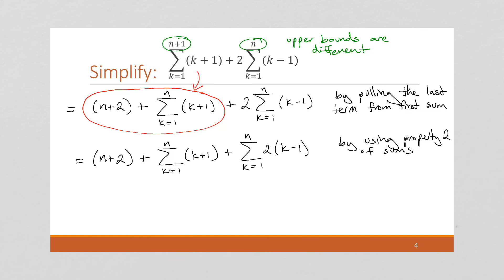Now, we notice that these two sums have the same bounds so I can combine them into a single summation. So, this is using property 1.